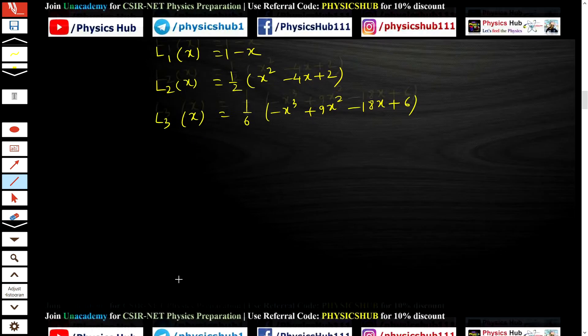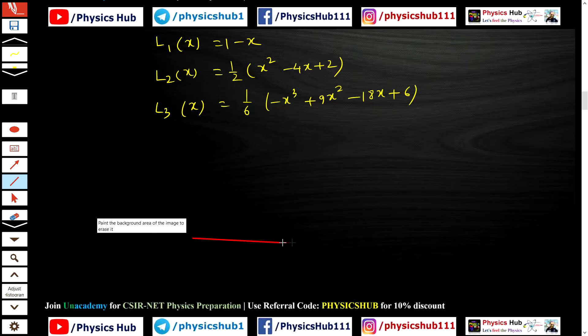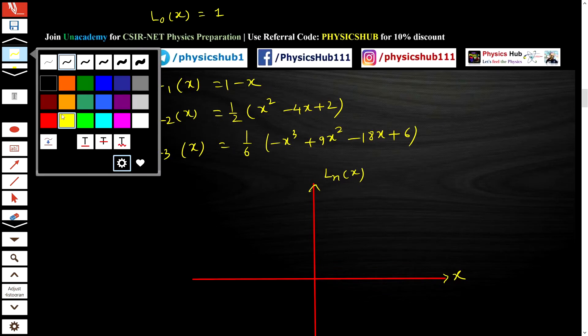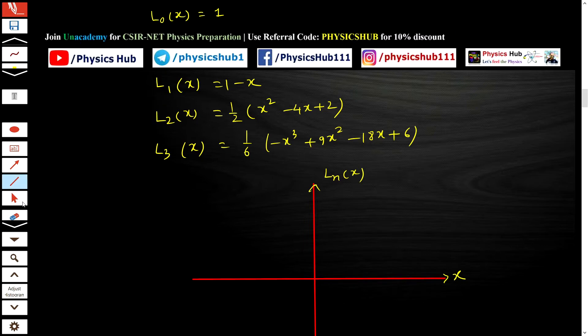I am drawing it here. This is the zero line, x-axis. This is the y-axis. What we are plotting is Ln(x) versus x. The first curve, L₀(x) = 1, is a constant value. If you plot L₀(x), it will be a straight line parallel to the x-axis.